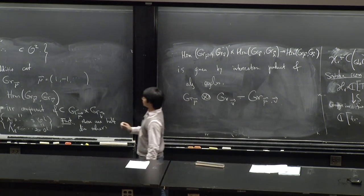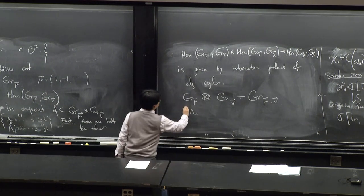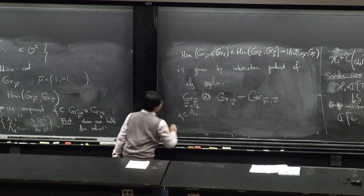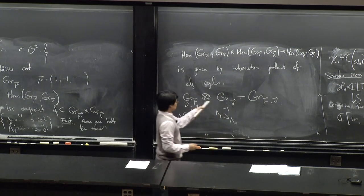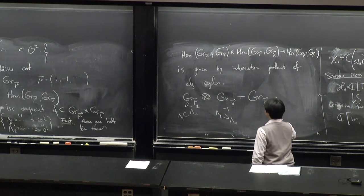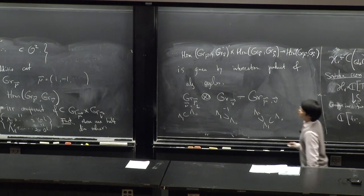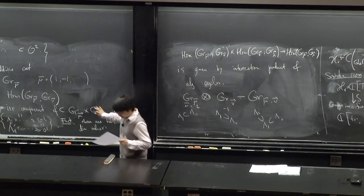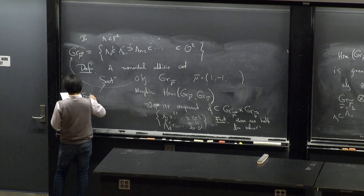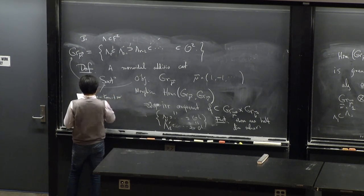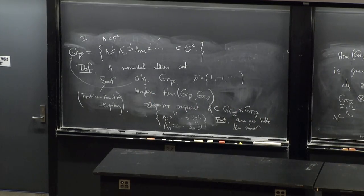The monoidal structure is defined by composing chains: if you have a chain for μ and a chain for μ', you put them together. This definition of the category already appears in the work of Fontaine-Kambenetzer and Kupferberg.